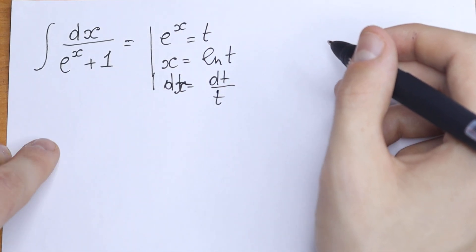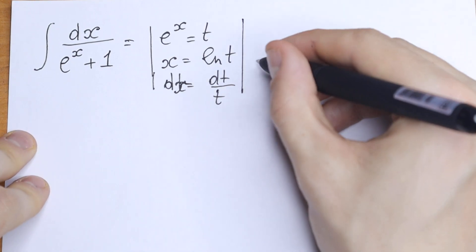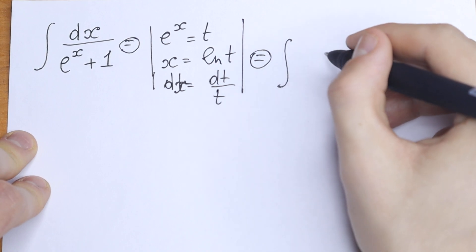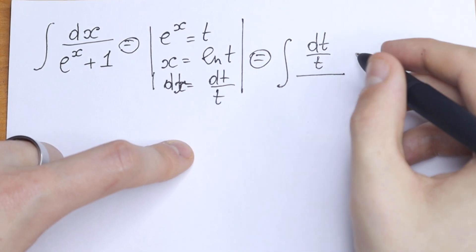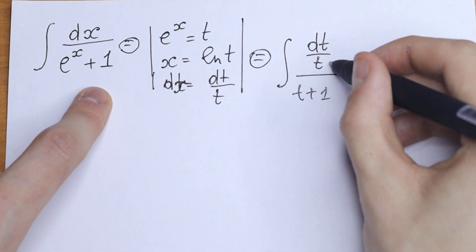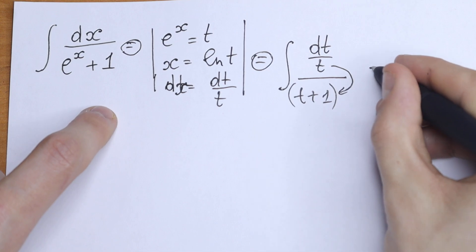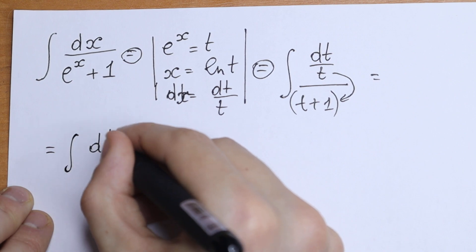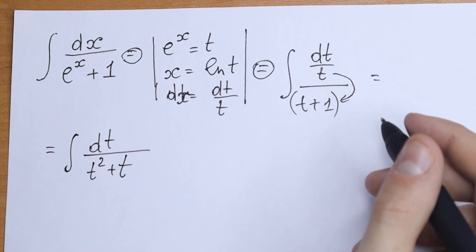So we change all of these elements. Let's put all of them inside the integral. So our integral becomes the integral of dt over t, and in our denominator we will have t plus 1. Simplifying, this t combines with the denominator, and we multiply t by the parentheses t plus 1. So the result is the integral of dt divided by t squared plus t.